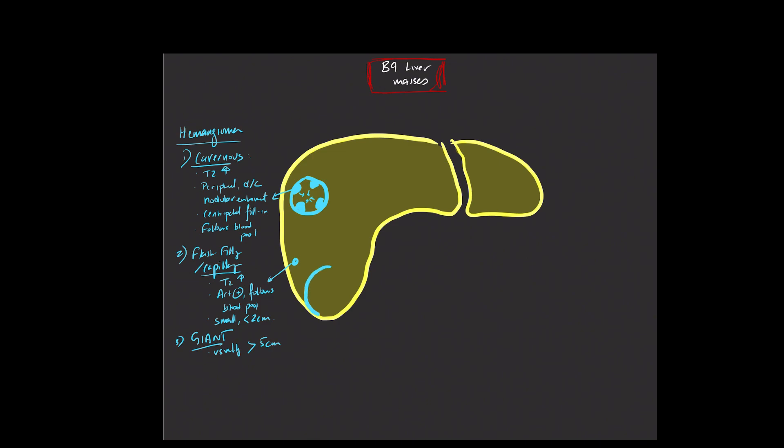Generally, the imaging features of a giant hemangioma will be very similar to the cavernous hemangioma, in that you're going to see a large mass with peripheral discontinuous nodular-like enhancement that fills in and follows the blood pool.